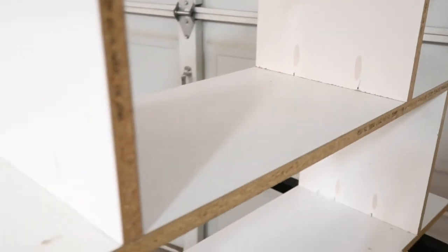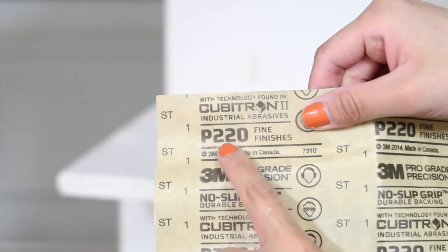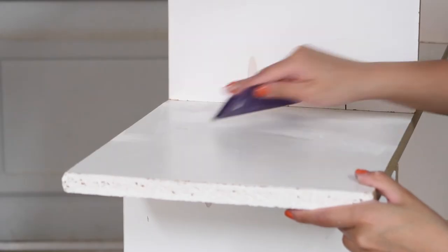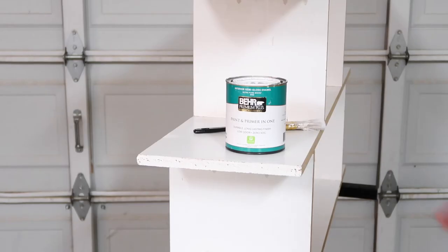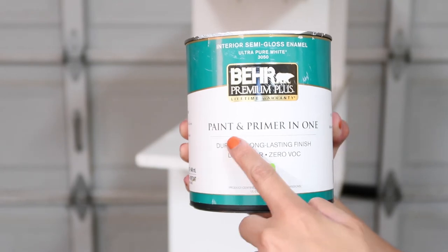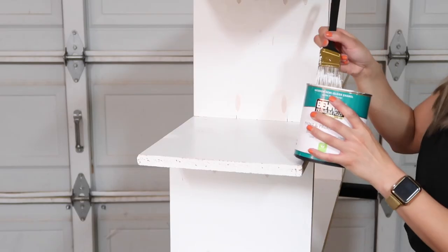Once you've let the spackle as well as the wood filler dry, then you go in with a sandpaper that is about 220 to sand everything down. The last step is to really just give it a fresh coat of paint.